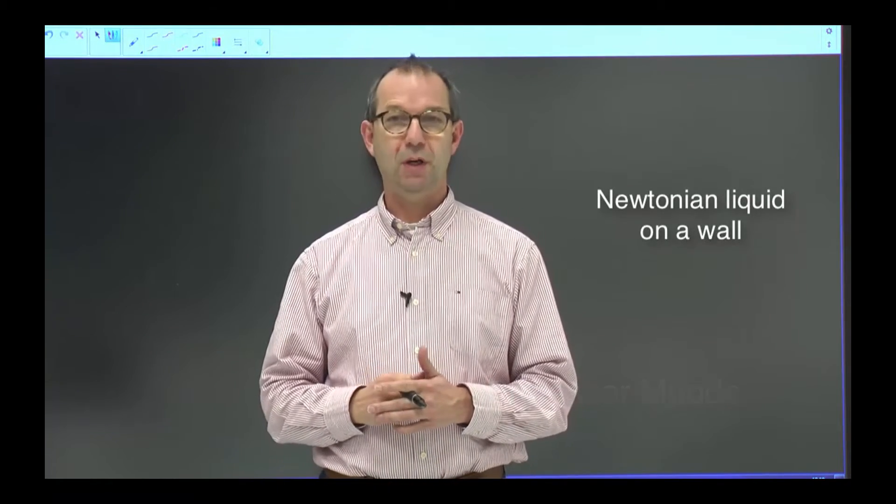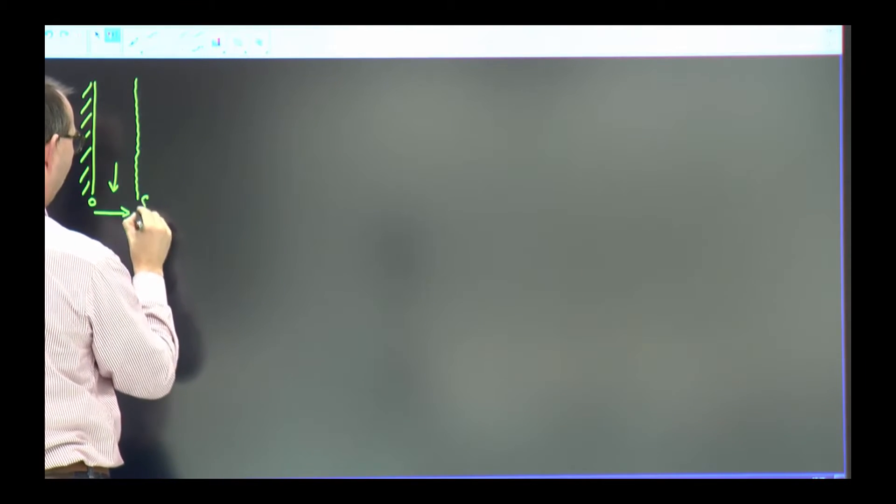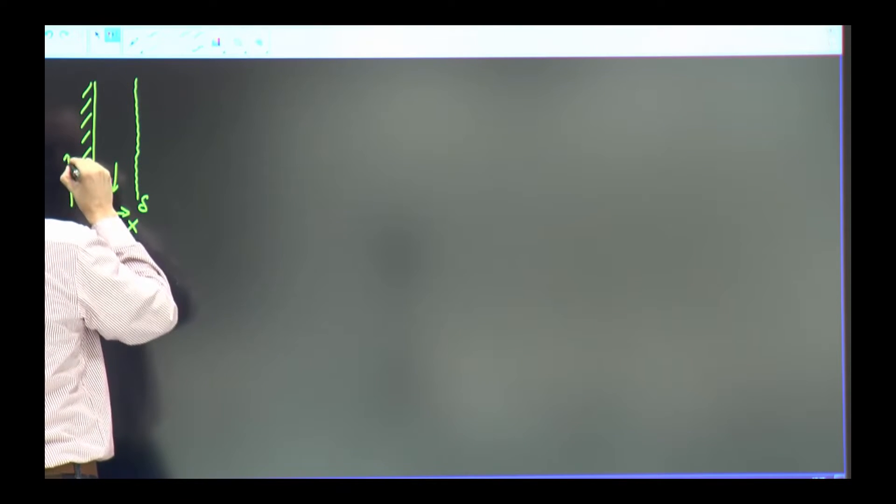Welcome to our smart board. In the example I'm going to discuss with you, we will look at the flow of a thin layer of water across a vertical wall. Here's my sketch — this is the wall, and this wavy interface denotes the interface of the water. Liquid is coming down. I will use a coordinate system with x in the horizontal direction from zero to delta, the thickness of the layer, and y denoting the vertical direction.